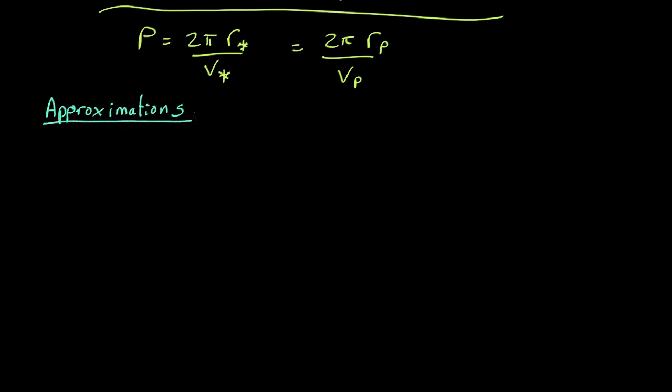And the main approximation we're going to make is that the mass of the star is very much more than the mass of the planet, which is pretty well always true. So it's a good approximation to make.